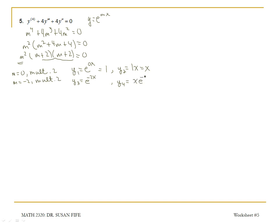So the entire general solution is going to be c1 times y1 plus c2 times y2 x, plus c3 times y3 e to the negative 2x, plus c4 times y4 x e to the negative 2x. This is our general solution.